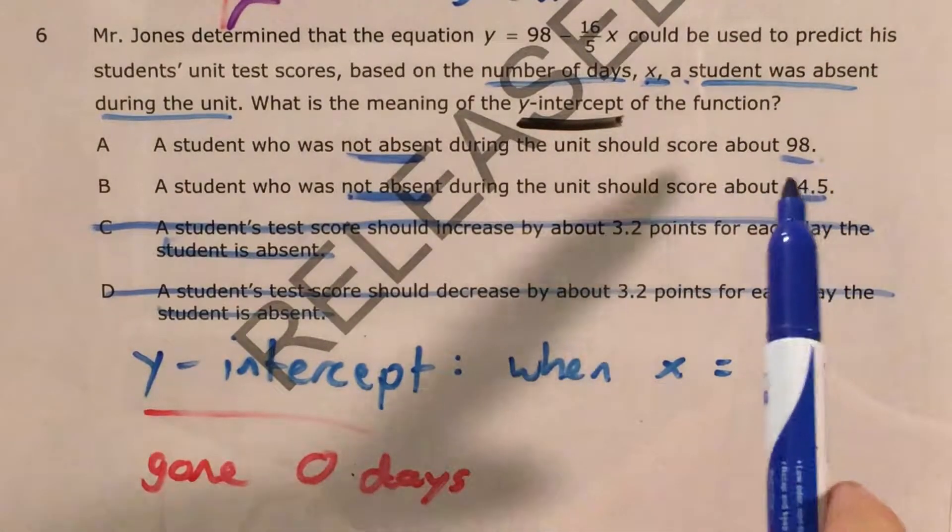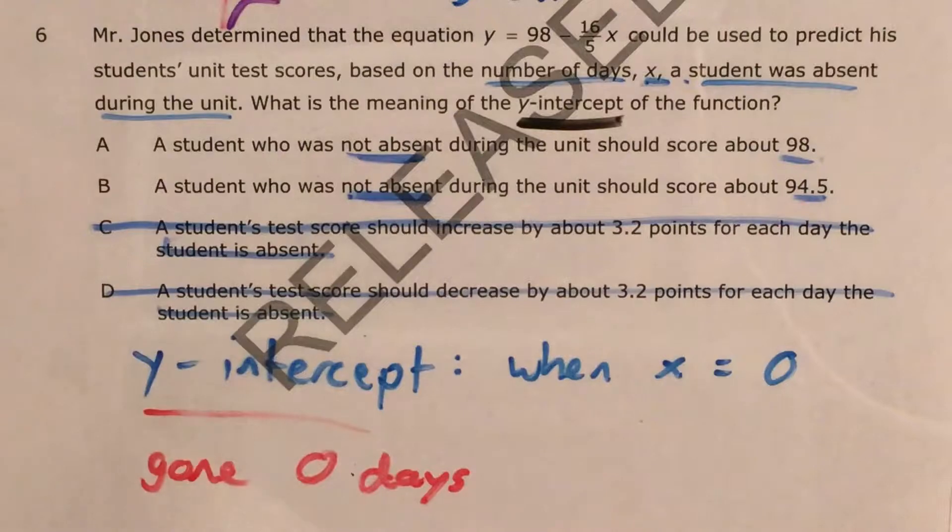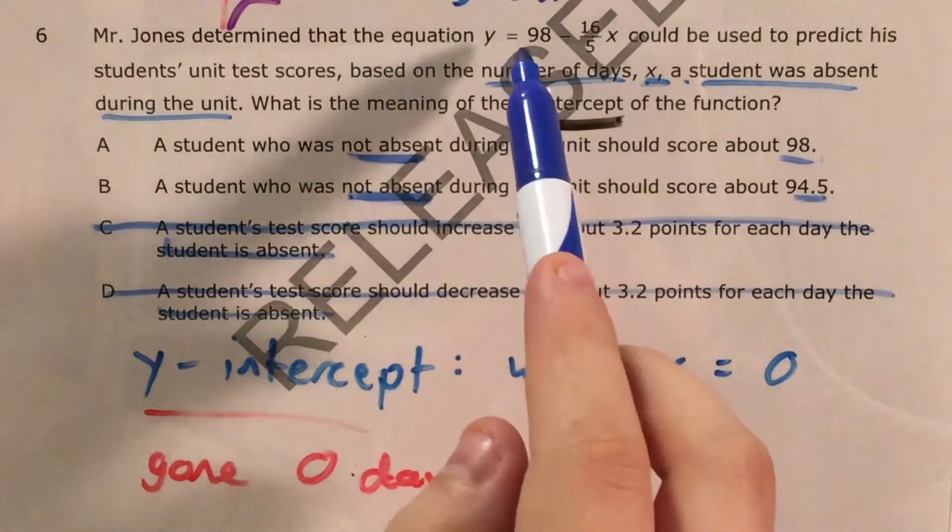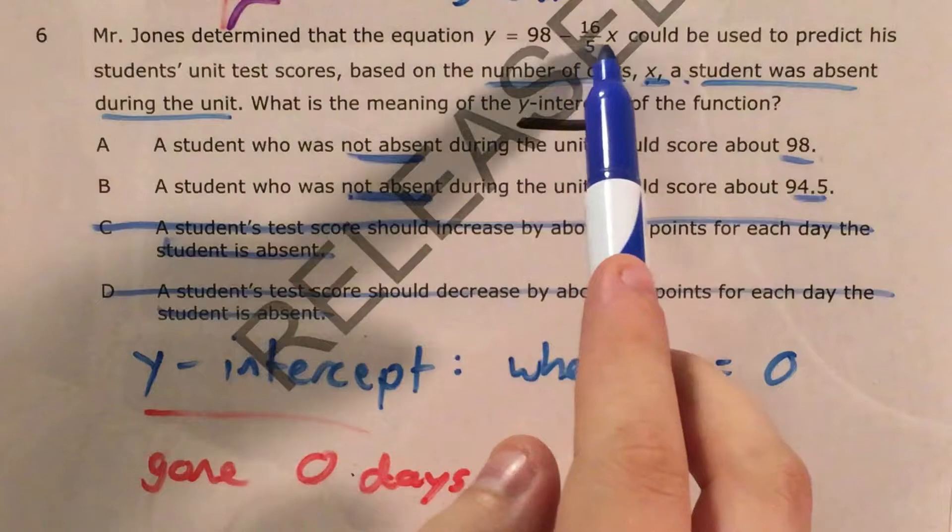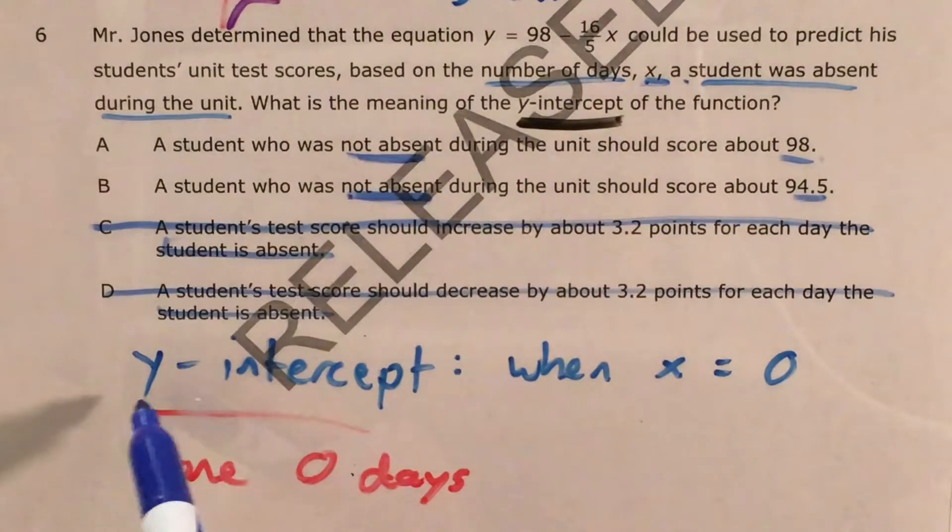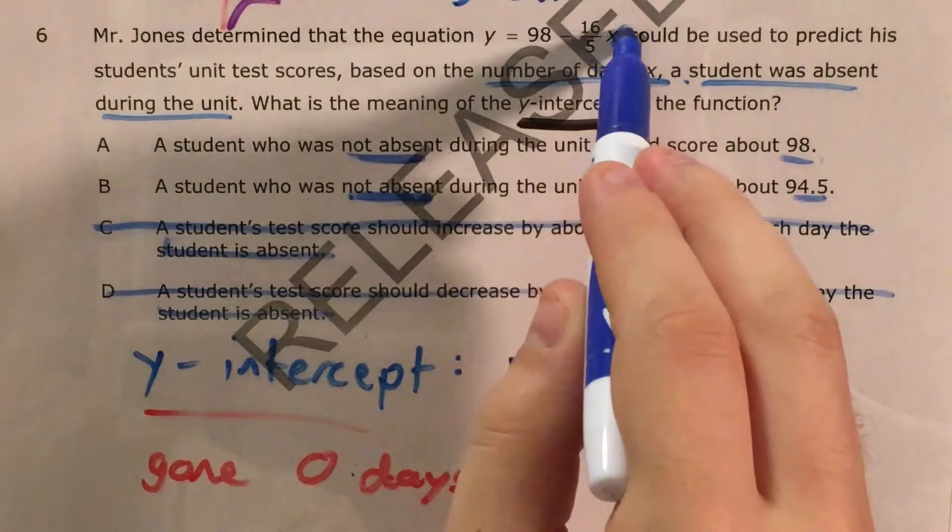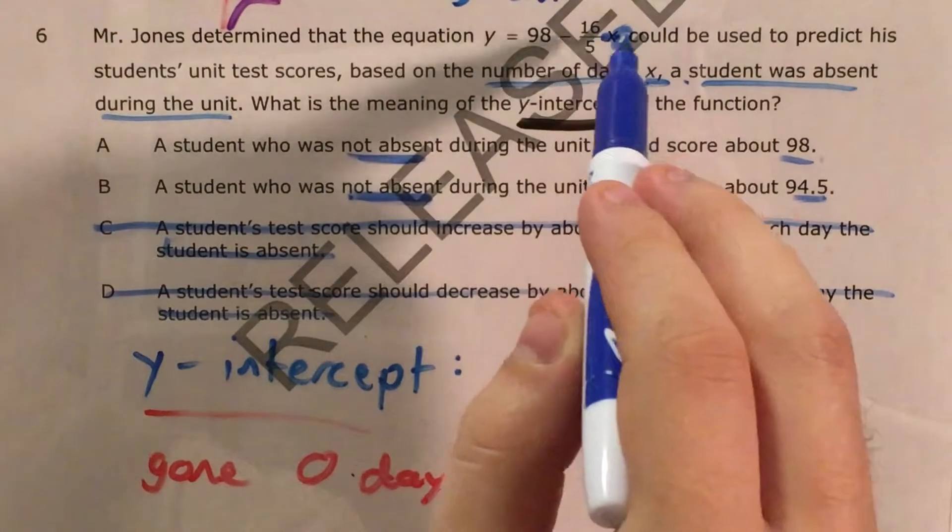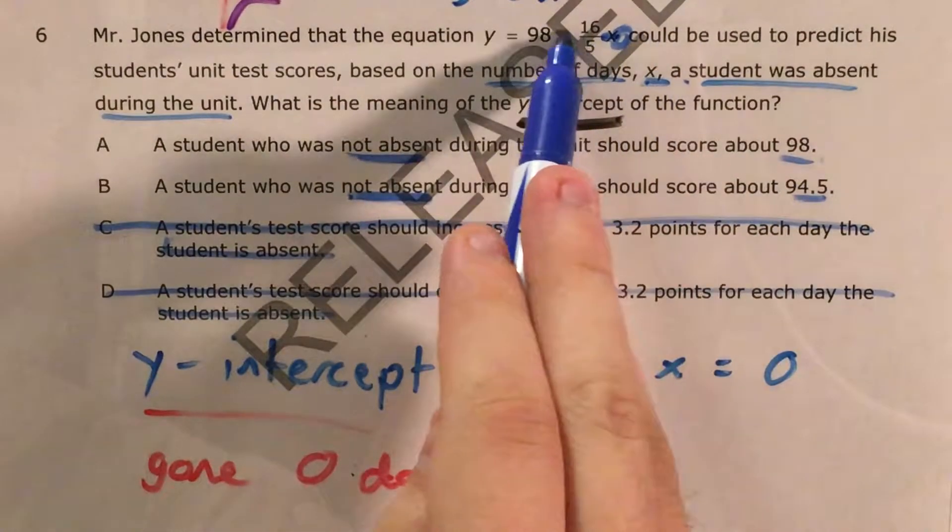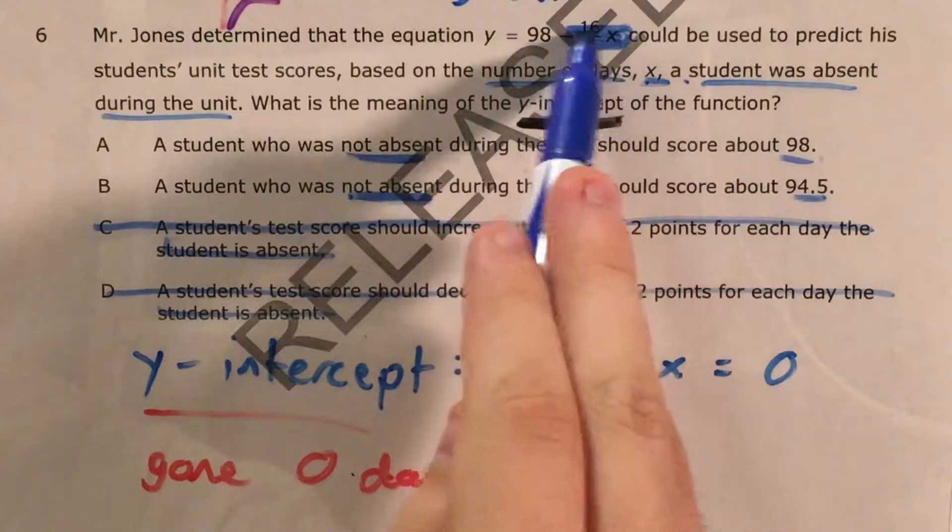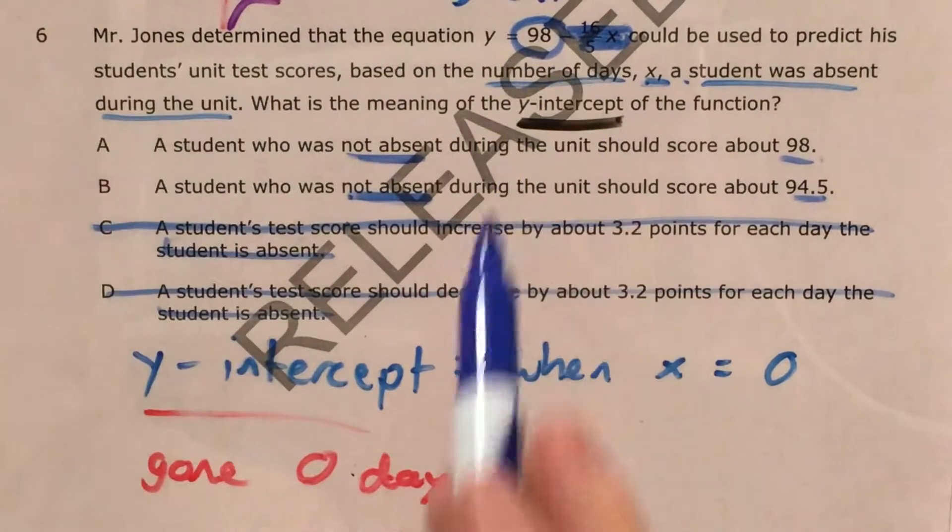So our question is, which of these two numbers is the y-intercept, 98 or 94.5? Now if I come back to this formula, 98 minus 16 fifths x, and I know that my y-intercept is what happens when x equals 0, if I plug 0 in for x here, any number times 0 is just going to give me 0, and 98 minus 0 is still 98.